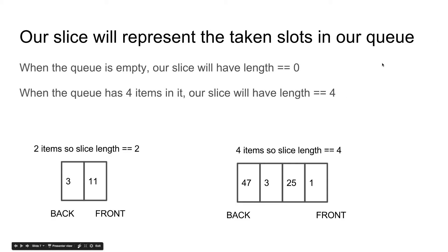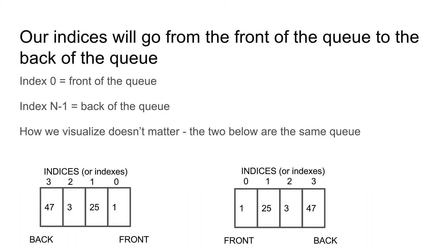Before we jump into the code, I want to give a rough overview of our implementation. The length of our slice will always equal the size of our queue — if our queue has zero items, our slice has length zero; if it has four items, length four. The capacity of our slice — the total allocated memory — might change, but the length will always exactly match the number of items. Our indices go from front to back, meaning index zero represents the front of the queue and the highest index represents the back.